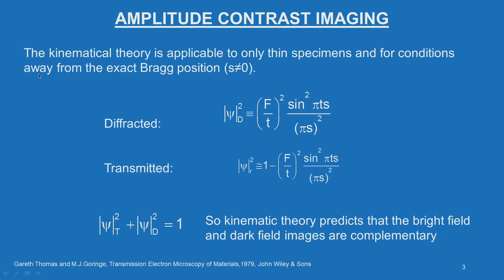The kinematical theory is applicable only to thin specimens and for conditions away from the exact Bragg condition, that is S not equal to 0. You have to remember this point very clearly. We will use this parameter called the deviation parameter S, which describes when diffraction takes place away from the Bragg position — whether S equals 0 (exact Bragg condition) or S is not equal to 0 (away from Bragg position).